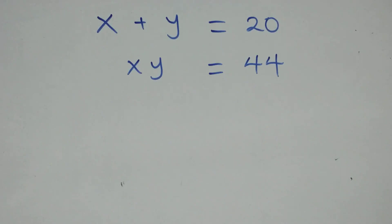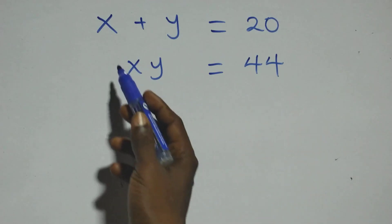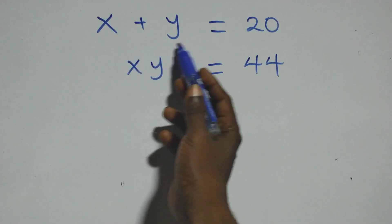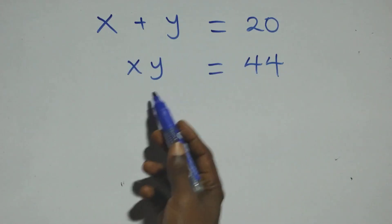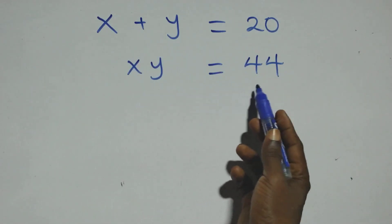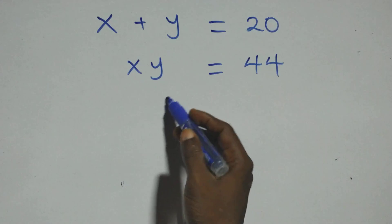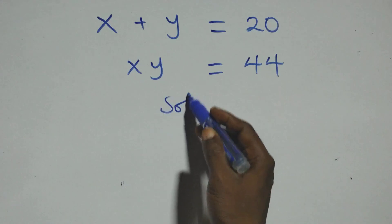Hello, you're welcome. How to solve this nice algebra equation: x plus y equals 20, and x times y equals 44. Solution here.